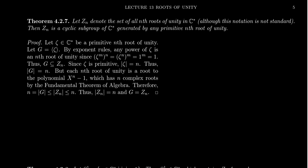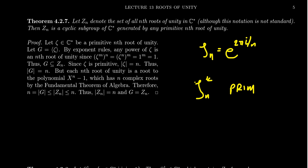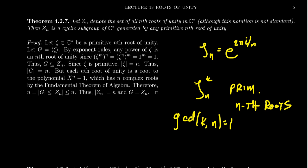We've introduced the roots of unity in the complex number system. We had these symbols zeta sub n, defined to be e to the 2 pi i over n. We argued that zeta n to the k are the primitive nth roots of unity whenever the gcd of k and n is equal to 1. Remember the roots of unity are those numbers which when raised to the nth power give you 1; the primitive ones are those where no smaller power than n gives you 1.